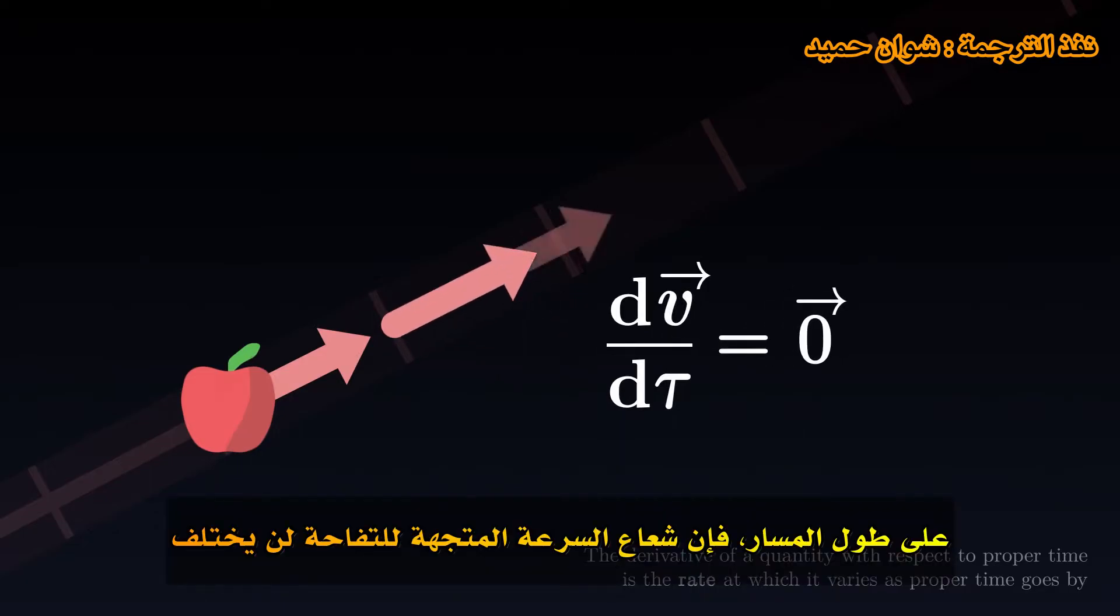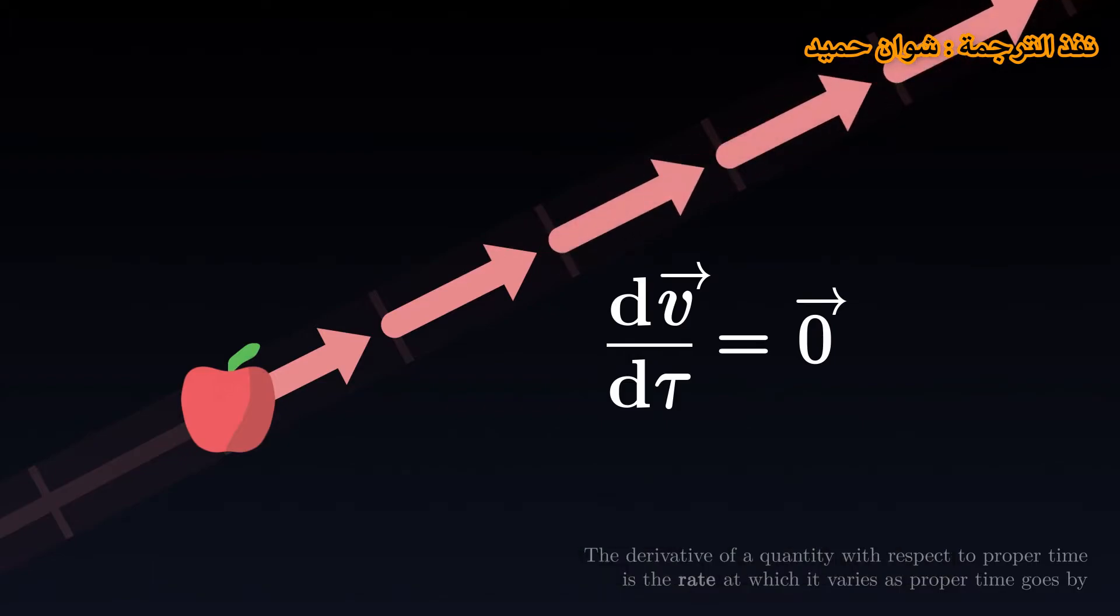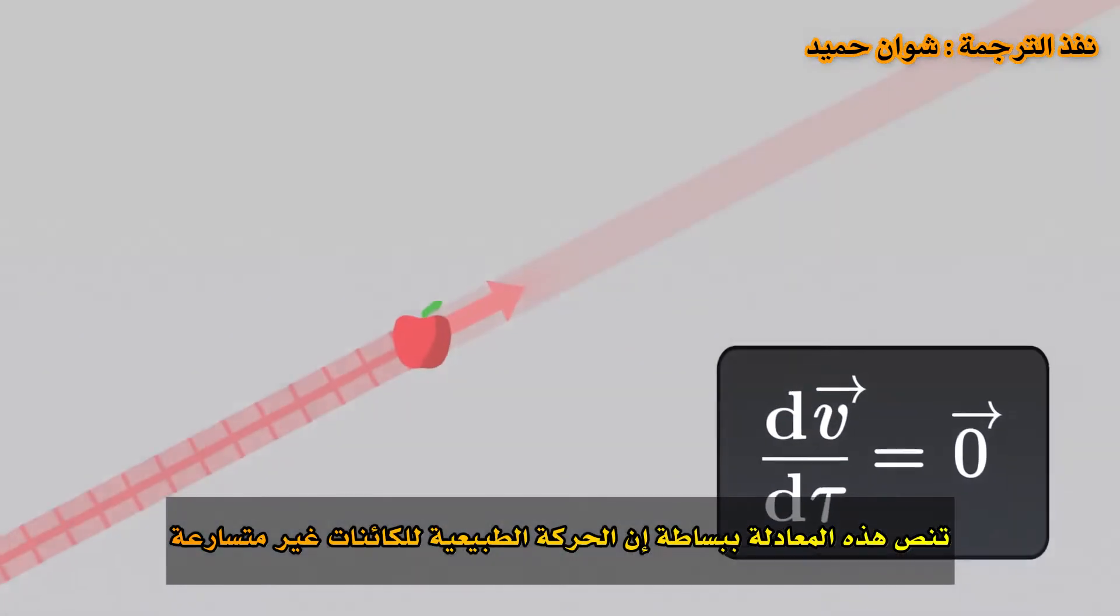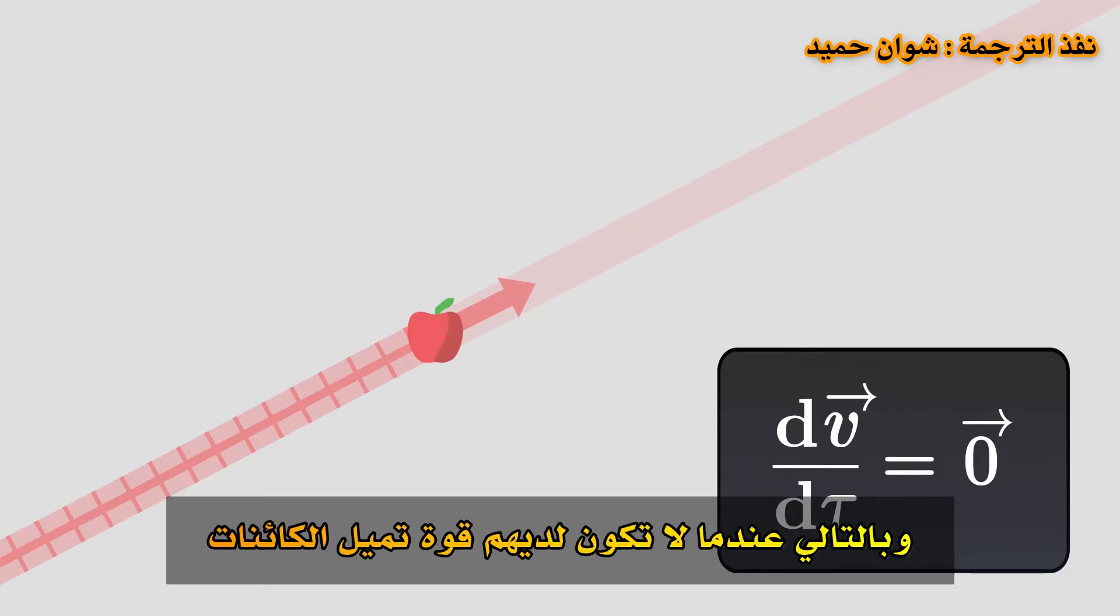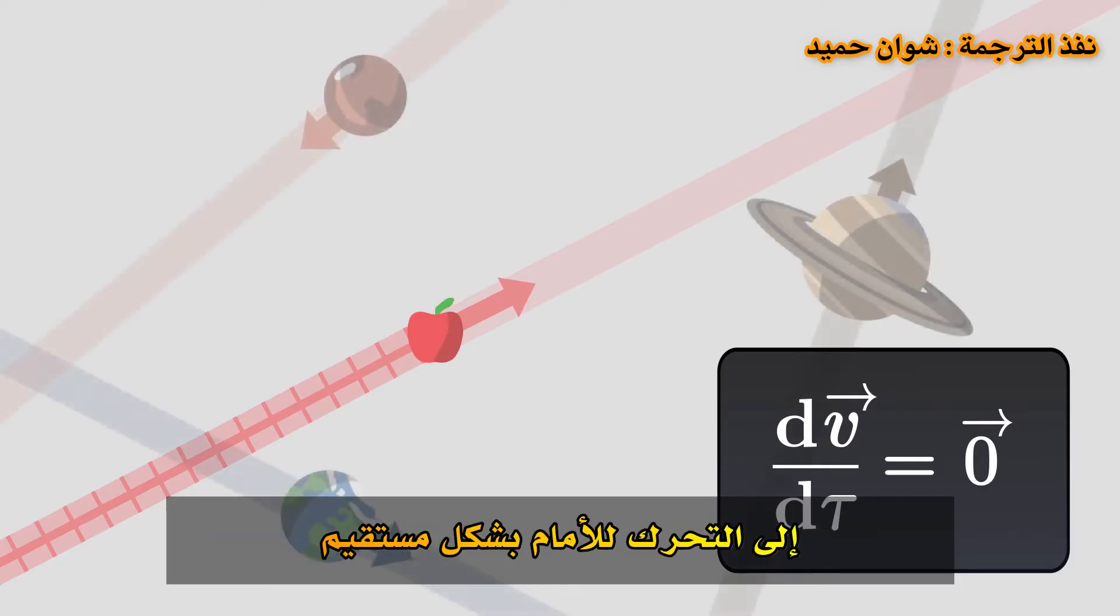Along the trajectory, the velocity vector of the apple does not vary. This equation simply says that the natural movement of bodies is non-accelerating, and therefore that when they experience no force, objects tend to move straight ahead.